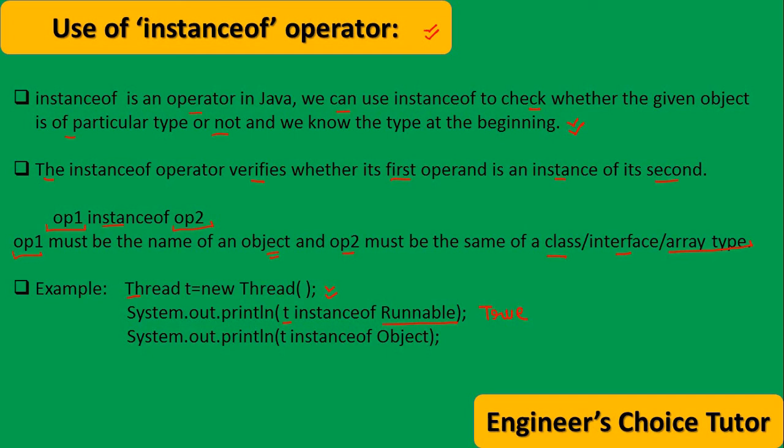Why it will give true? Because t is thread type. Thread is instance of Runnable only, because Thread implements the Runnable interface. Thread is also the Runnable type. That's why it returns true.